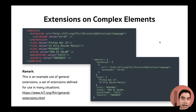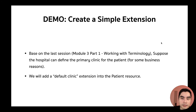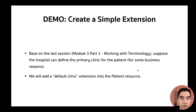For example, if you have any resource — say Encounter — and you want to specify the language of an element, you can add the language extension there. This is an example of a general extension that FHIR provides for reuse across contexts.